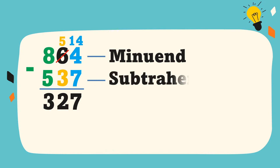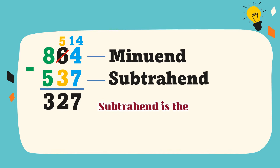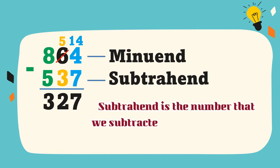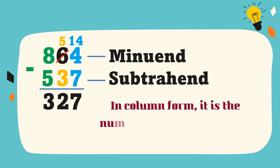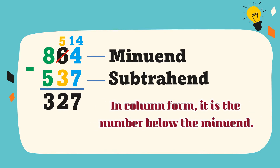537 is the subtrahend. Subtrahend is the number that we subtract from the minuend. In column form, it is the number below the minuend.